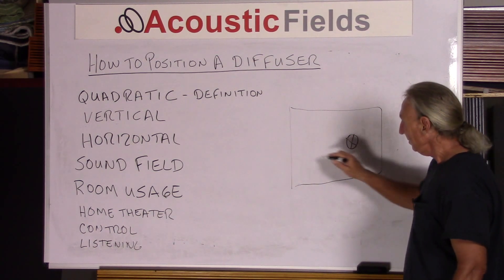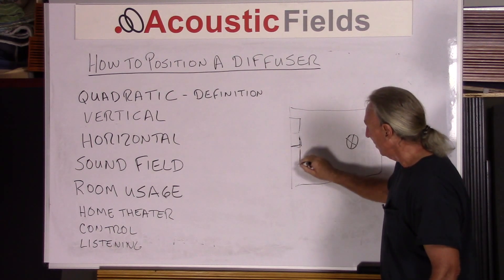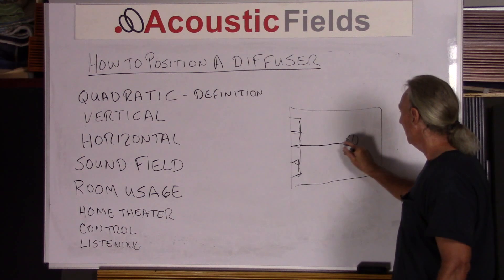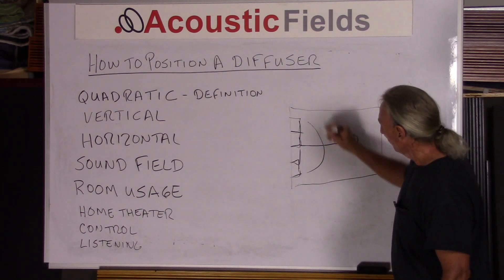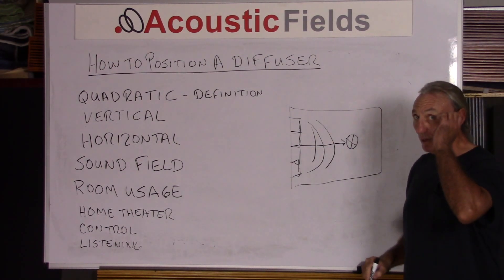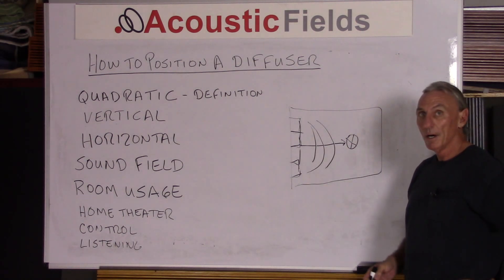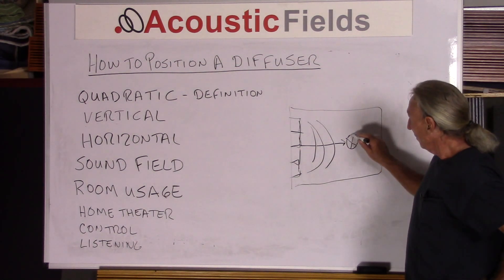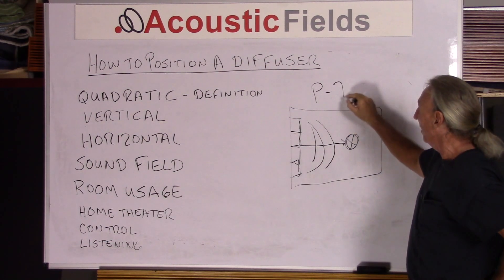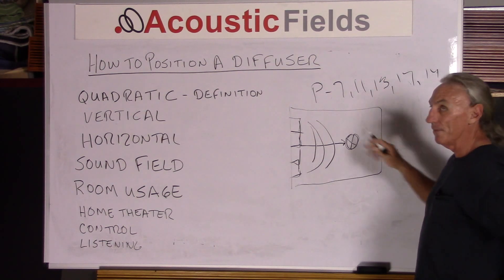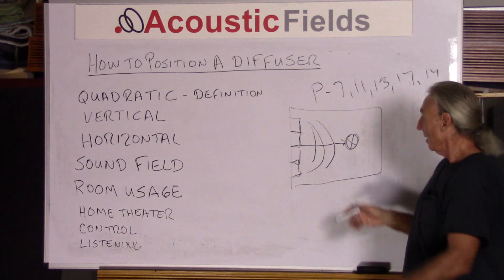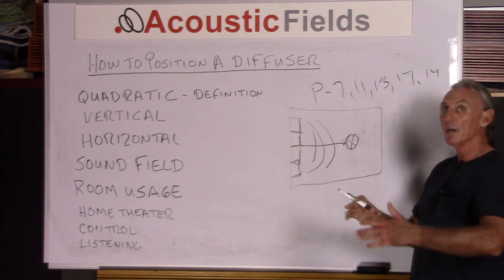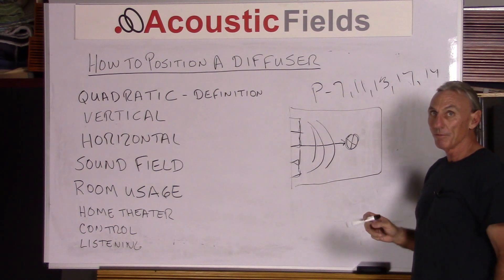The prime number sequence you choose for your diffusers requires that the seated distance has enough space for the waveform to fully form before it reaches the listening position. A good summary: take the lowest frequency of the diffuser and its quarter wavelength, multiply it by 4, and add 50% of that distance. If you have that distance, you can use the particular prime number sequence. We have sequences of 7, 11, 13, 17, and 19 — as you go higher up the scale, you need more distance between the diffuser and the listening position. It is the diffuser-to-listening-position distance that is critical; you must have enough distance for the frequencies to fully form.